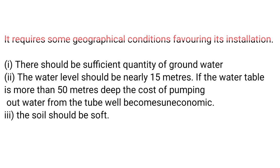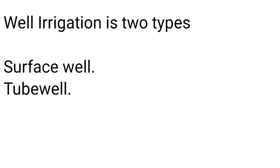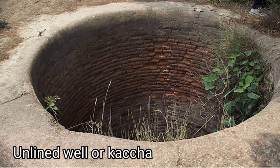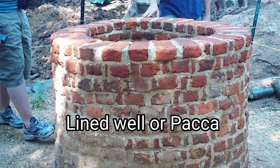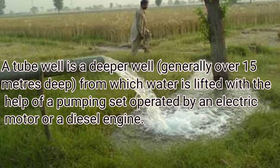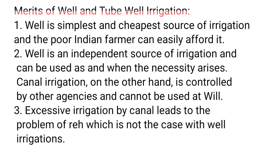Wells are of different types: surface wells and tube wells. Surface wells are of two types — lined (paka) wells, which have a protective outer cover, and unlined (kacha) wells, which do not. Well irrigation is very popular in areas where sweet groundwater is available, mostly in the northern plains and the delta regions of rivers. Tube wells are much deeper than ordinary wells, and water is lifted using an electric motor or diesel engine. Well and tube well irrigation is the simplest and cheapest form of irrigation.